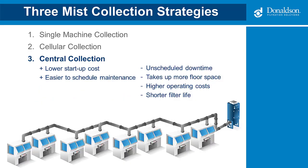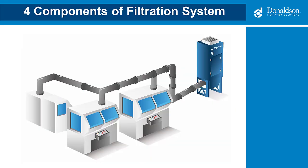The final strategy is a centralized system for all machines. This was a popular approach 15 to 20 years ago but is not too common today. The disadvantages typically outweigh the advantages: if the mist collector is down, the whole plant is down; it's more difficult to reclaim your coolant; installation costs could be greater due to extensive ductwork with more potential leak points; there's no forgiveness for a challenging application mixed into the process; and there's no flexibility for changes in the process or moving equipment. When using a cellular or central approach, work with a qualified filtration expert for the right system and duct design.